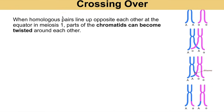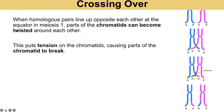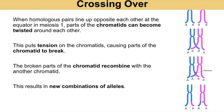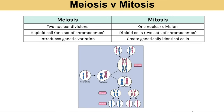Crossing over also occurs, though it's actually quite rare. It occurs when homologous pairs line up at the equator forming a bivalent, and chromatids from each chromosome cross over and get twisted around each other. This puts tension on the chromatids causing part of the chromatid to break and swap. In doing that, we create new combinations of alleles — so originally a chromosome might only have had a dominant allele, but now we've got both dominant and recessive, creating new combinations of alleles on that chromosome.